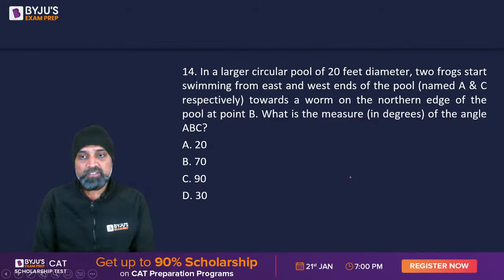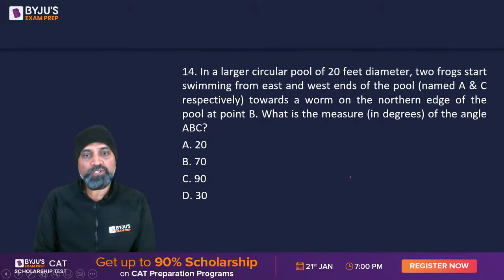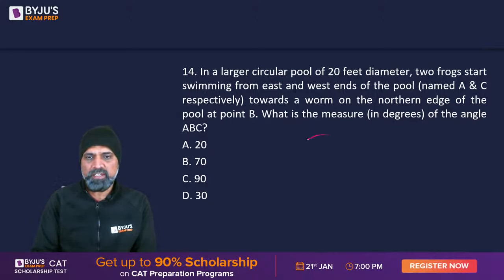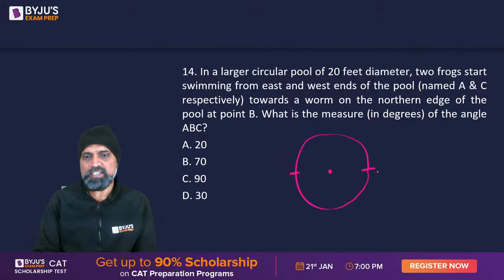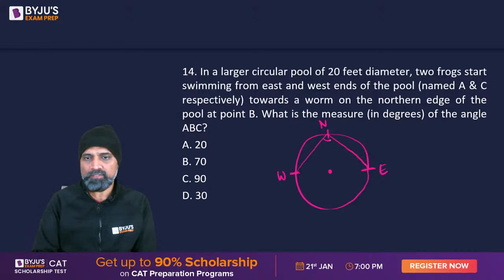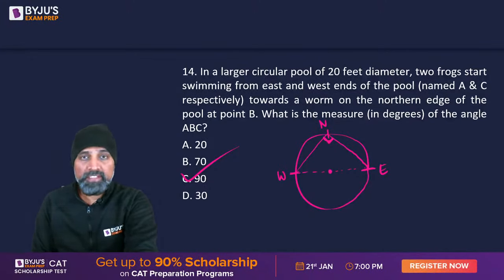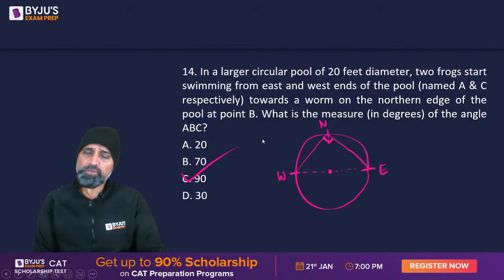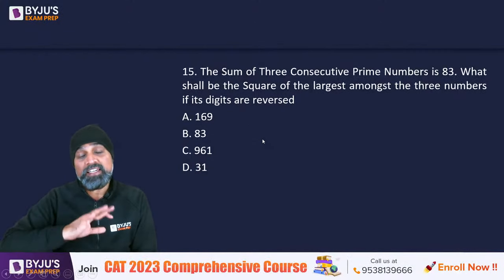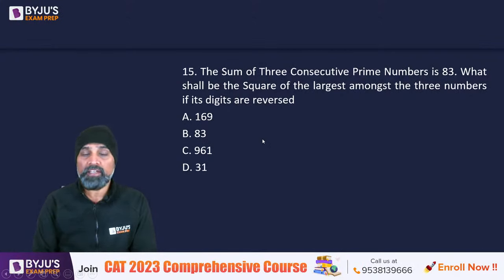Next: in a circular pool of 20 feet diameter, two frogs start from east and west ends (points A and C) toward a worm at the northern edge (point B). What is angle ABC? This is the angle subtended by the diameter at point B on the circle. By the inscribed angle theorem, any angle subtended by a diameter is 90 degrees. The 20-foot diameter is irrelevant.